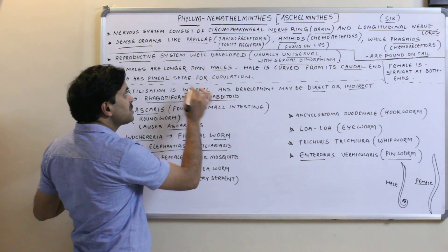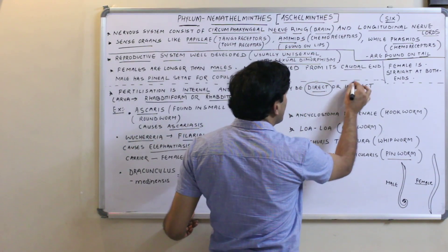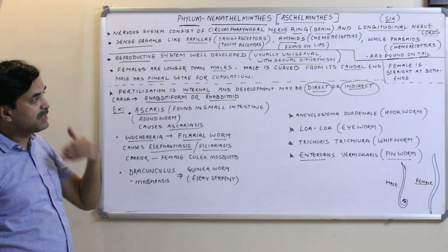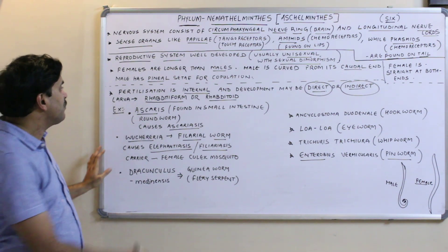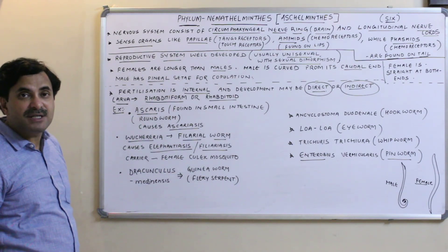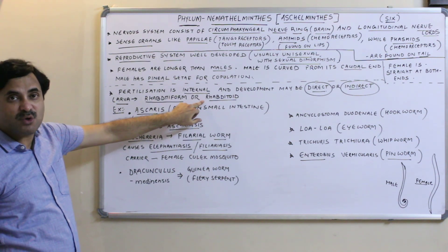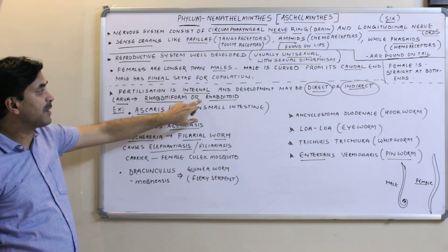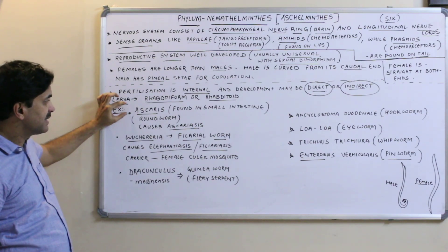Fertilization is internal. Development may be direct (no larva) or indirect (larva present). The larva, where present, is a rhabditiform larva — for example, Ascaris has a rhabditiform or rhabditoid larva.